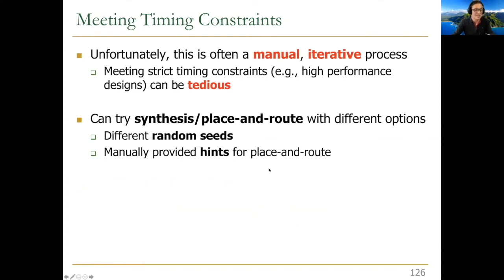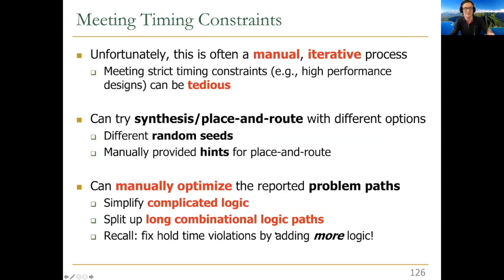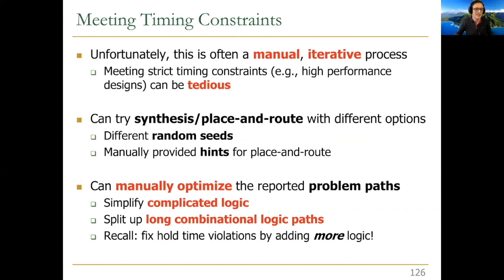You can also manually provide hints to the tool, though this becomes very tedious. You can manually optimize reported problem paths — simplify complicated logic, split up long combinational logic paths. That's always a good idea in general. The difficulty is that fixing hold time violations is particularly hard, as we discussed earlier. Meeting timing constraints is ultimately not an easy art and science, because both tools and humans are imperfect, and there are many ways to design a circuit — even a 4-to-1 multiplexer can be designed three ways with different timings.